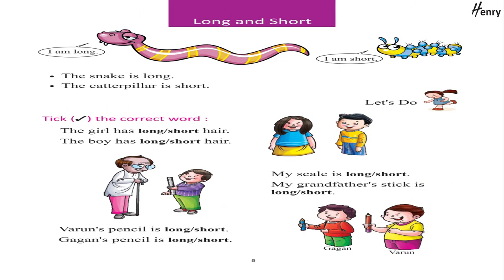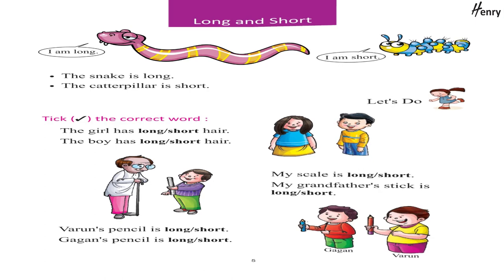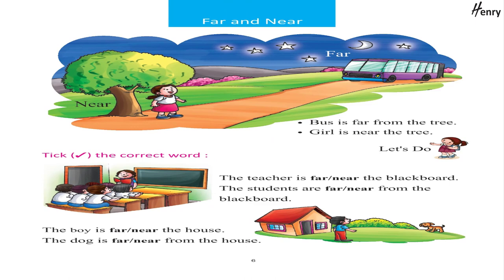Long and Short: I am Long, I am Short. The Snake is Long, the Caterpillar is Short. Let's do — take the correct word. Far and Near: The Bus is far from the tree, the Girl is near the tree. Let's do — take the correct word.